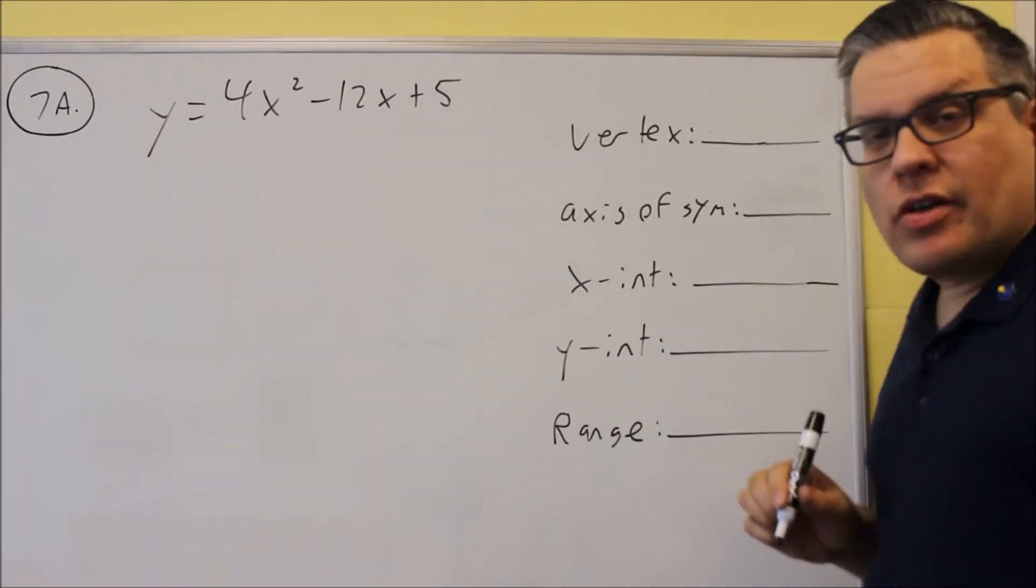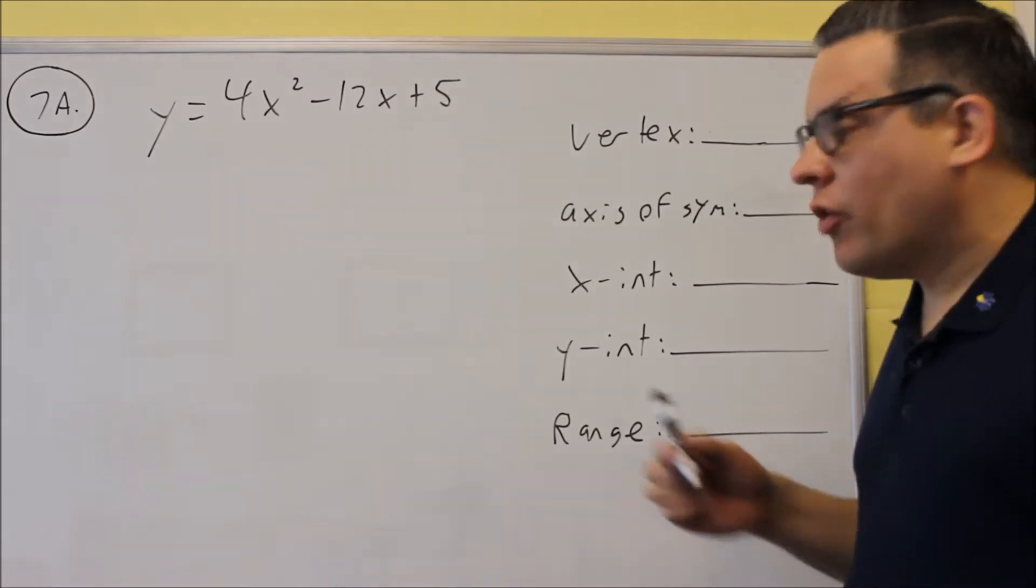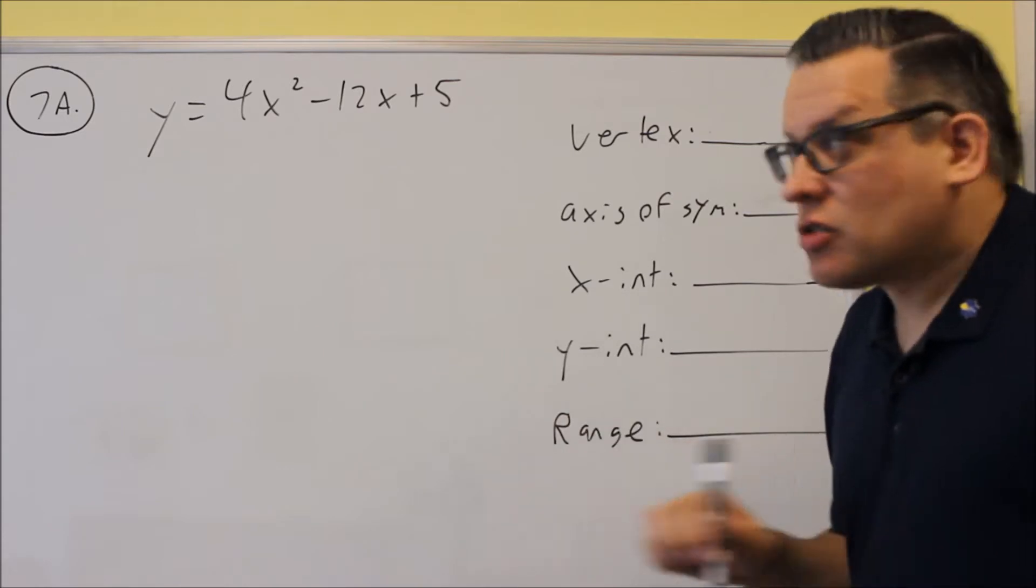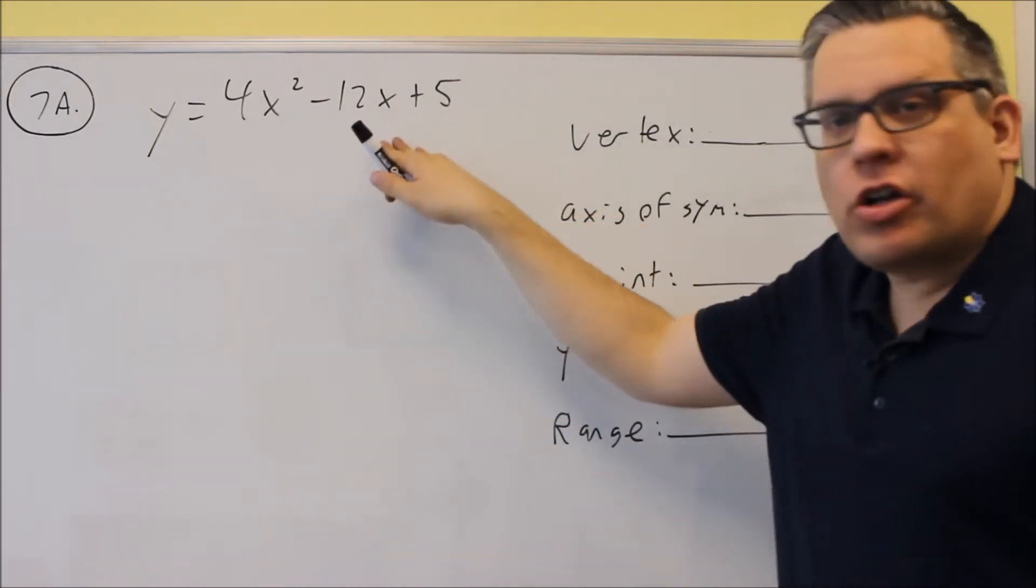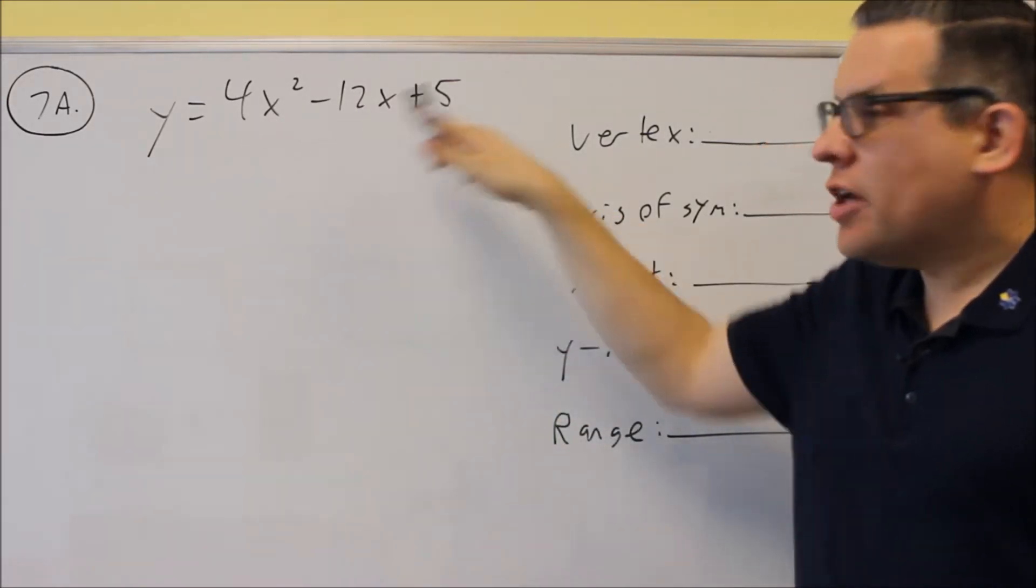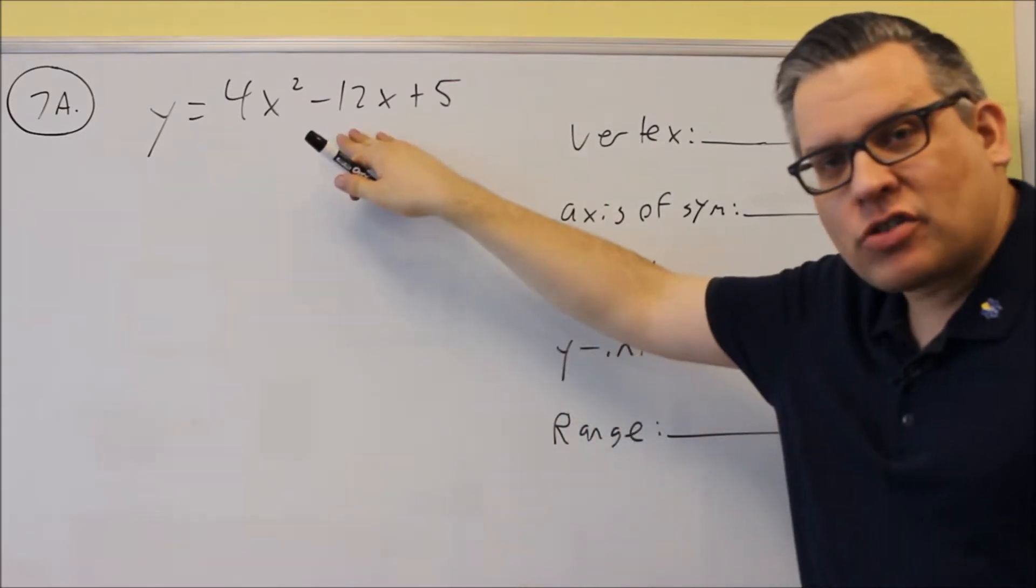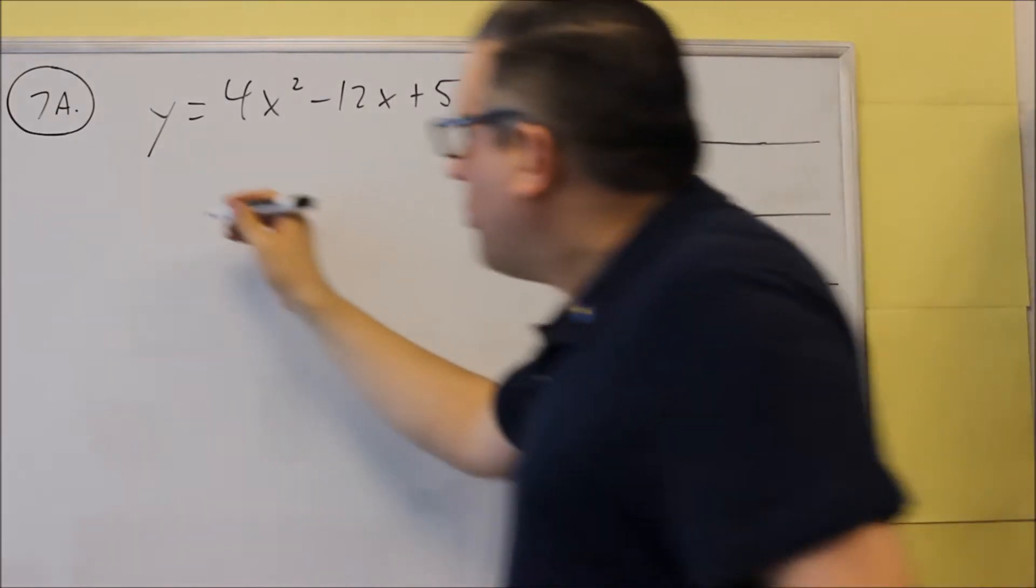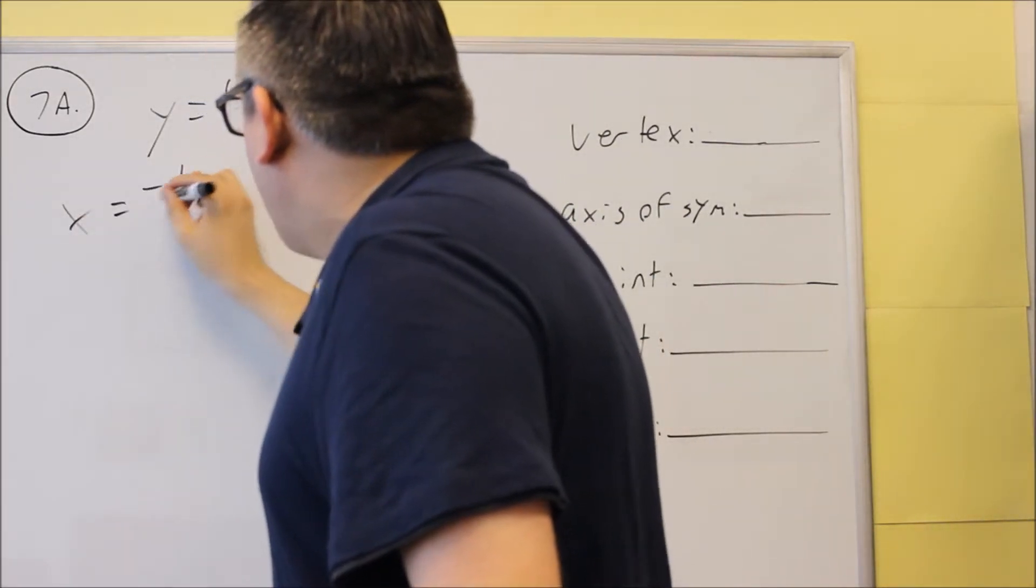So the first thing to ask for is the vertex. Now one formula that's going to be very important in this test, because it's used in several problems, is the vertex formula. So if you have something written in this form, ax squared plus bx plus c, so this is not vertex form, this is ax squared plus bx plus c, we have a formula that we're going to use, and this is going to be the vertex formula.